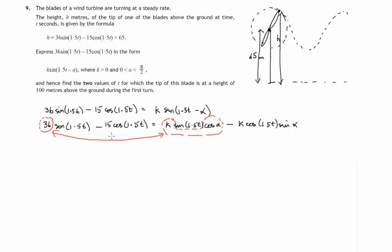A similar thing goes on with the cos 1.5t term which has a minus 15 there, and it's minus k times sine alpha over here. These two coefficients can be equated; they must be identical.